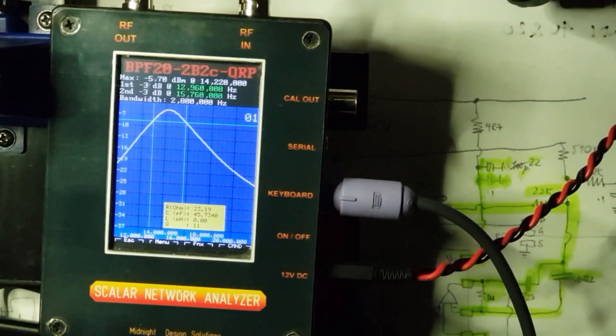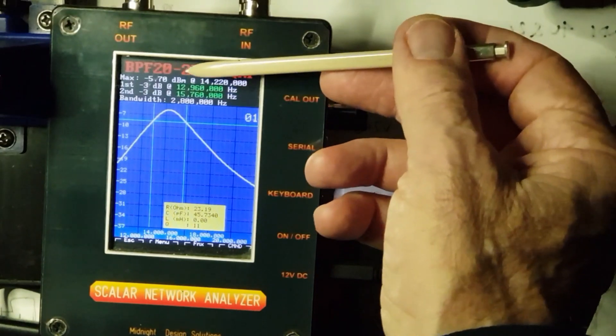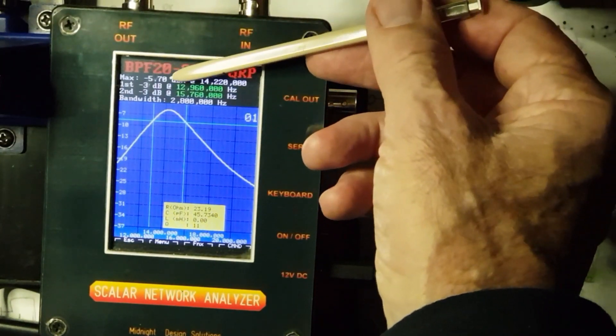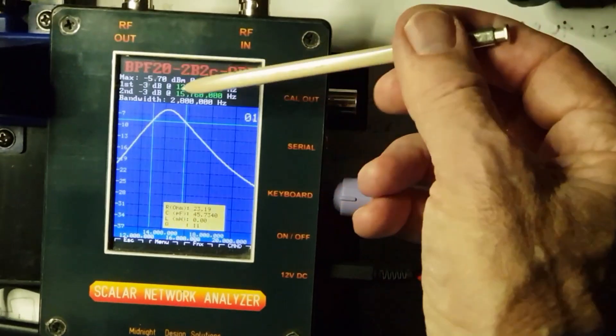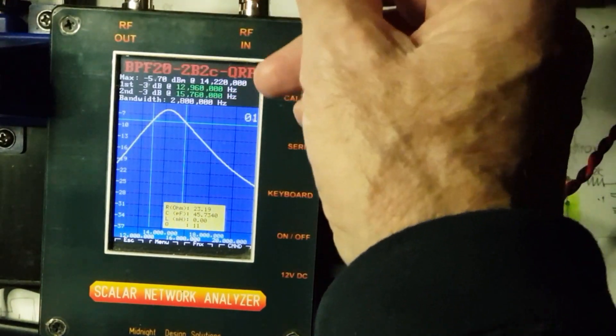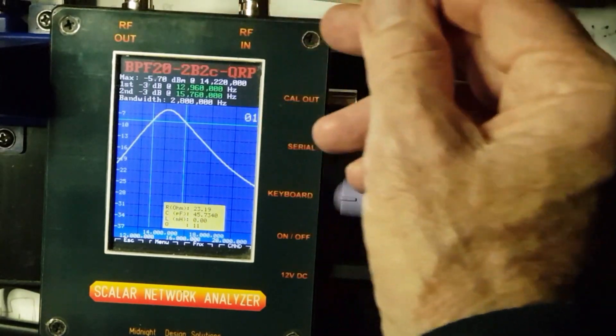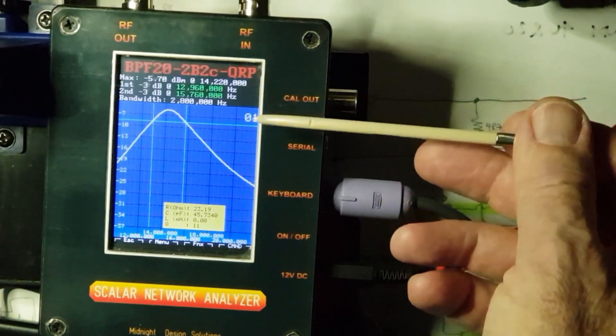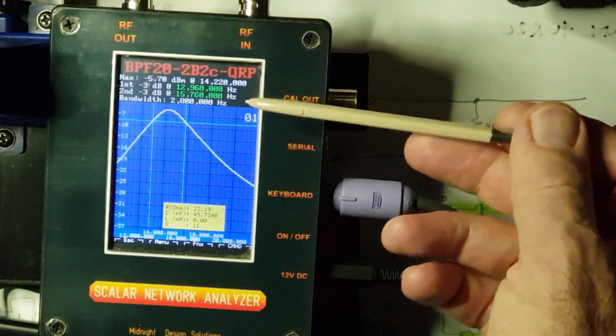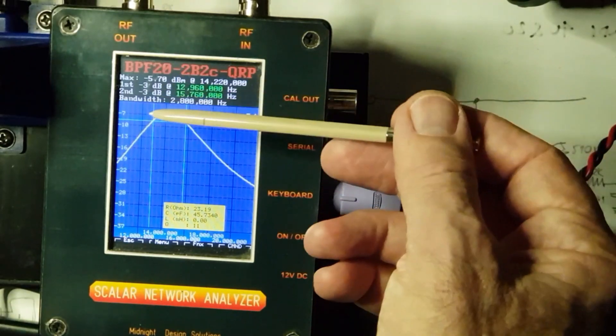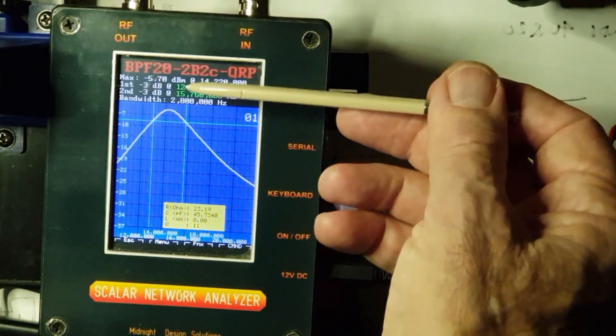Now that's very easily tuned. And it's showing the insertion loss as being minus 5.7 dBm. So by way of calibration, I took the bandpass filter out and just ran RF out straight to RF in. And I got between 0.1 and 0.9 dB.